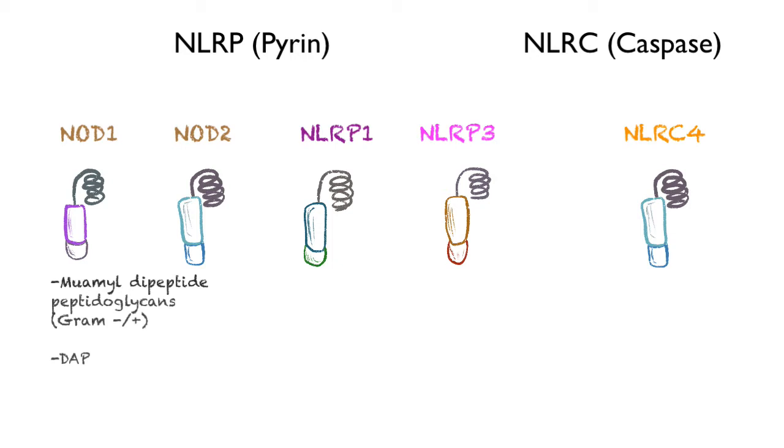NOD1 and NOD2 are different in that their signaling molecule is called RIP2, and the way I remember that is rest in peace, because of course all these are leading to death of pathogens and inflammation. So RIP2.